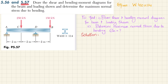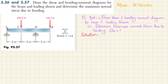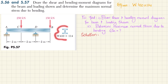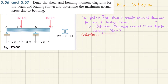Welcome back. Problem 5.57: draw the shear and bending moment diagrams for the beam and loading shown, and determine the maximum normal stress due to bending. This is an overhanging beam AB having a point load at point C of 250 kilonewtons and at point B we have 150 kilonewtons. The cross-section of the beam is W410 by 115. We will draw the shear force and bending moment diagram and then determine the maximum normal stress.